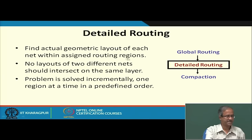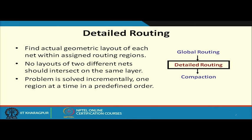A routing region can be a channel or another kind of structure called a switchbox. This step is called detailed routing, and we shall begin our discussion on this today. The scope of detailed routing is to determine the actual geometric layout for every interconnection net within the routing regions, and typically the routing regions are handled one at a time.